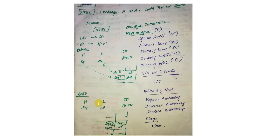For the exchange, we replace the memory data — we write the data back to memory. So we have to perform memory write cycles as well. In total, XTHL runs 5 machine cycles and a total of 16 T-states.